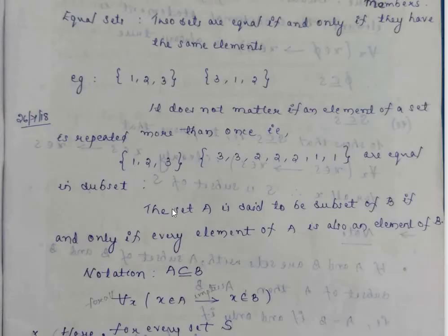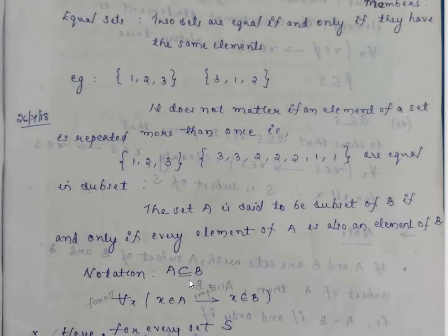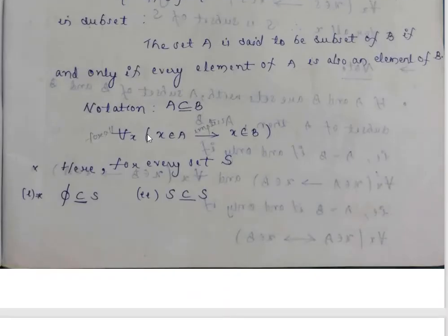The set A is said to be a subset of B if and only if every element of A is also an element of B. Notation: A subset of B. That is, for all x, x element of A implies x element of B.